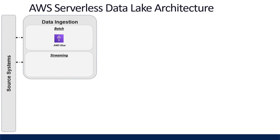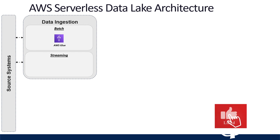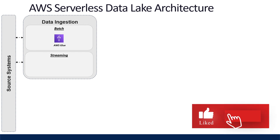AWS Glue provides both visual and code-based interfaces to make data integration easier. Glue leverages Spark so it can process your data in parallel across multiple machines. A lot of people don't know this, but you can actually run Python scripts without Spark in AWS Glue if you don't need the power of a cluster to process your data.